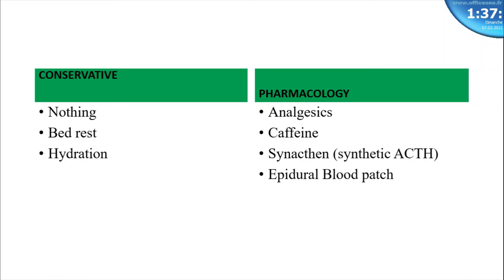The last and definitive option for PDPH is the epidural blood patch (EBP). Epidural blood patch involves the injection of autologous blood into the epidural space, thereby reducing the chance of CSF leakage by creating a blood clot which has a patching effect on the dura tear. Studies show that 88 to 90 percent of PDPH cases are successfully treated after the first epidural blood patch.